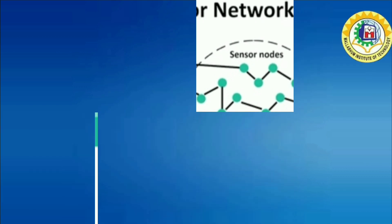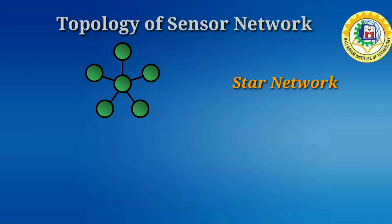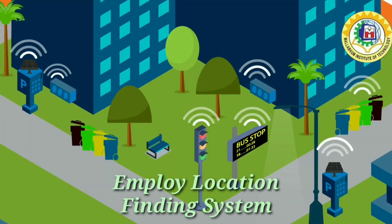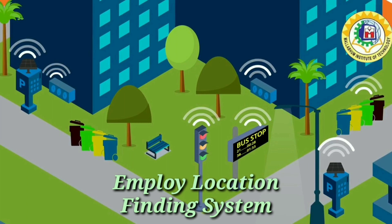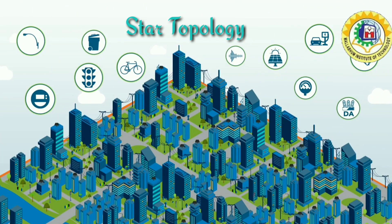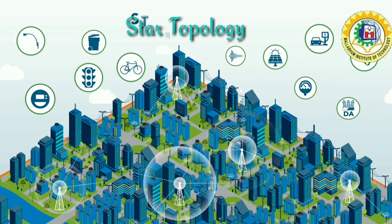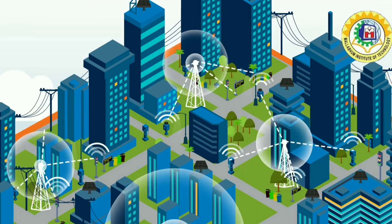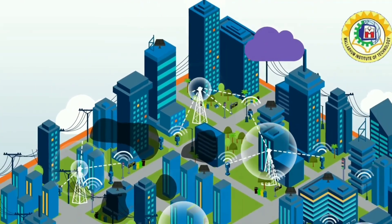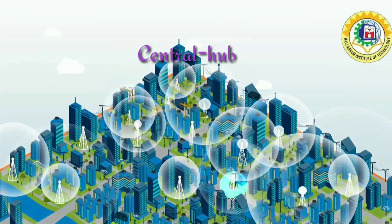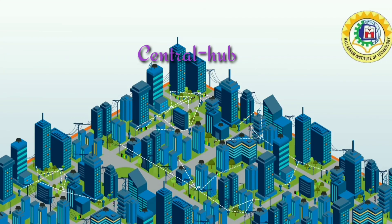The topology of a wireless sensor network can vary from a simple star network to an advanced multi-hop wireless mesh network. Global positioning system and local positioning algorithms can be used to obtain location and positioning information. Star networks are connected to a centralized communication hub and nodes cannot communicate directly with each other; the entire communication must be routed through the centralized hub.